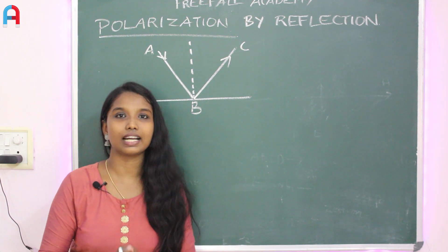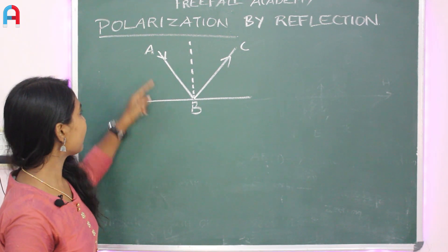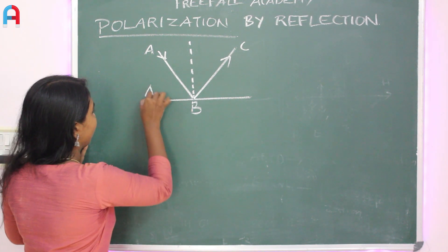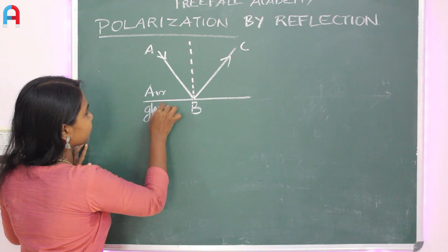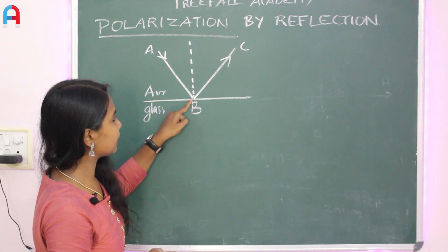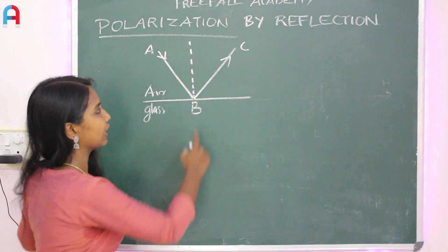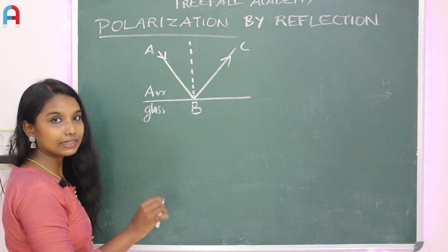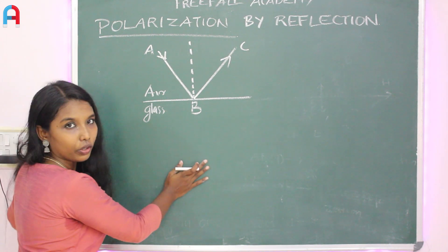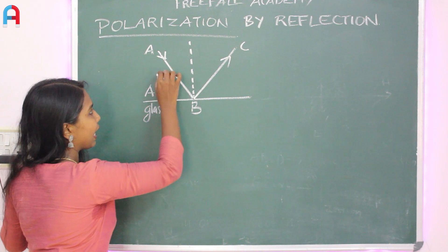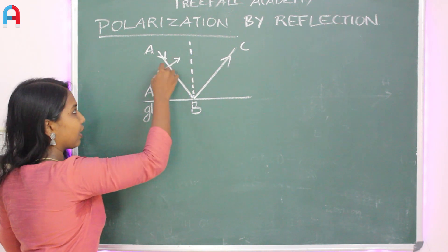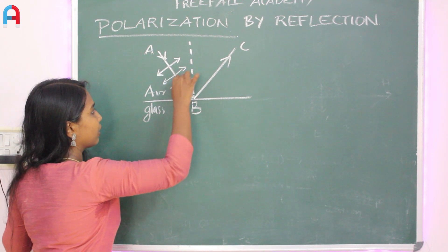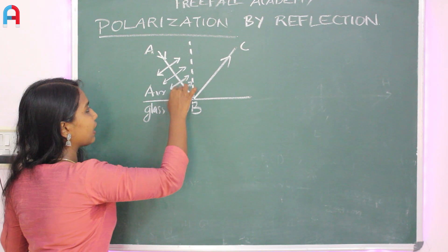Light is polarized. Here is a light ray. That is air, and below is glass. We are going to represent light waves. We are going to draw on the board and show parallel light rays. We are going to put the arrow here, and the board is going to represent perpendicular vibrations.